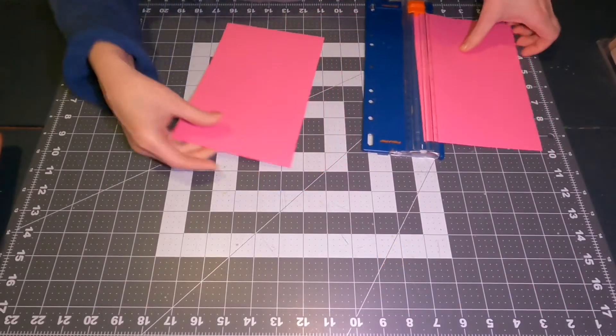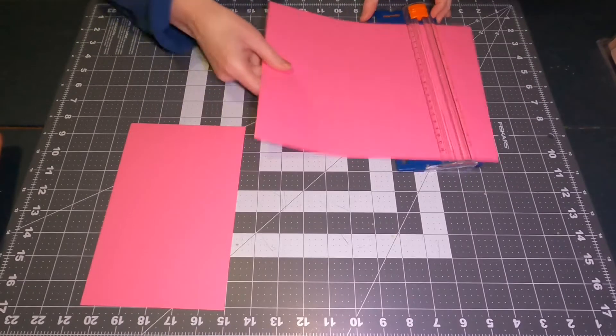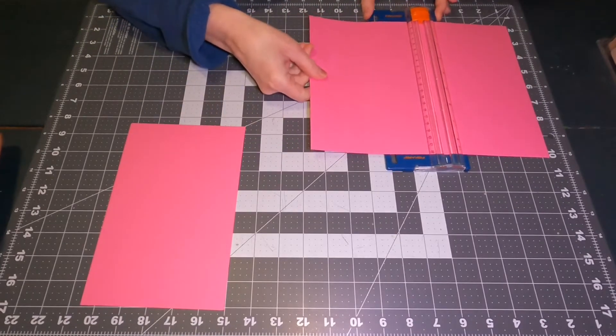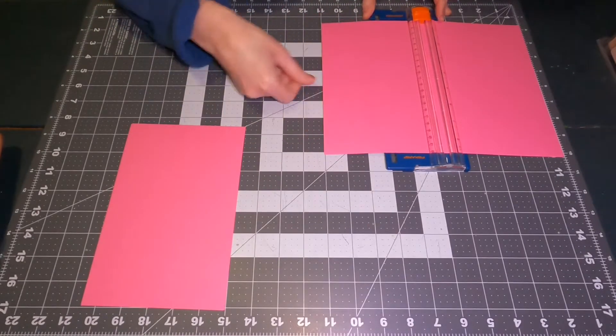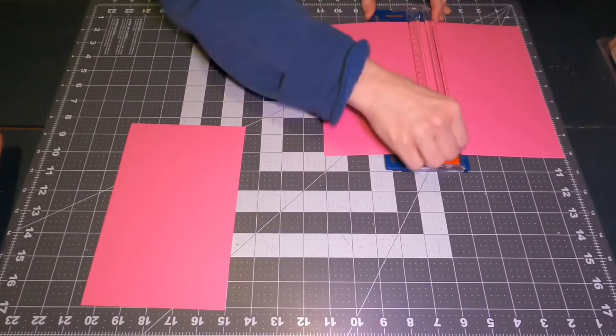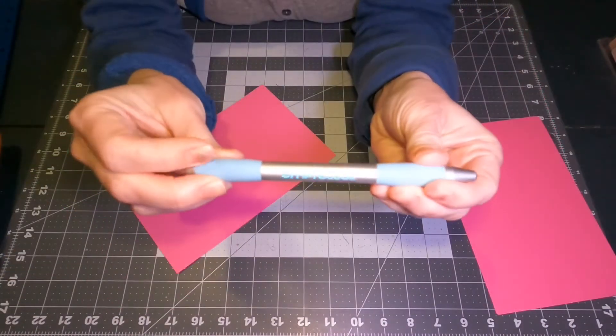I'm using hot pink cardstock. It's 11 inches in length, so I'm cutting it at five and a half inches. I'm using my mat as a guide along with my cutter so I can cut it exactly in the center.